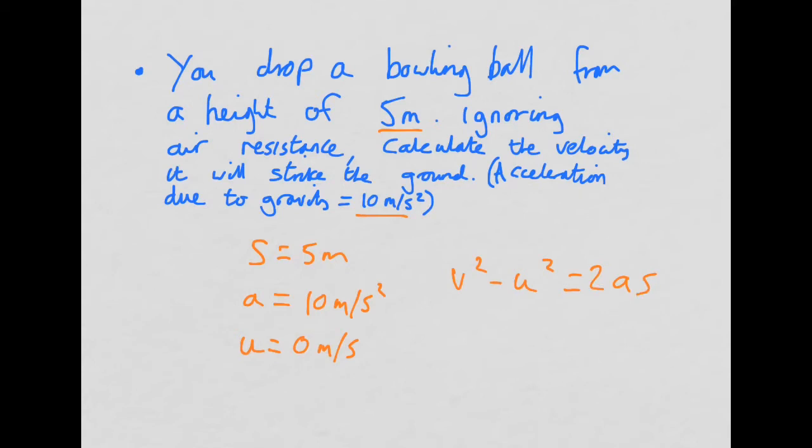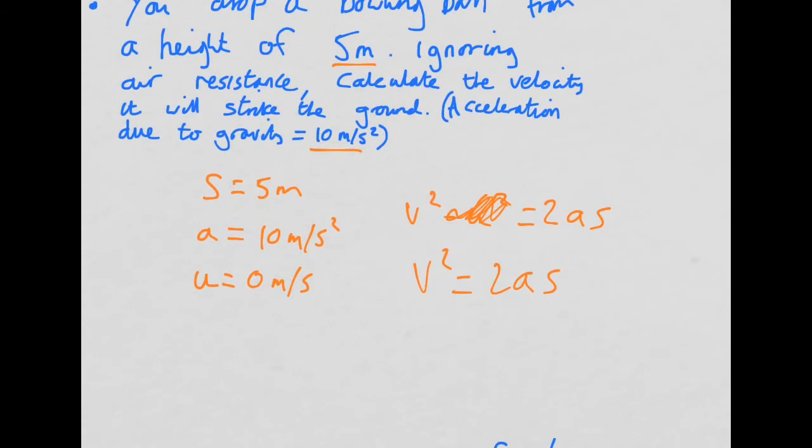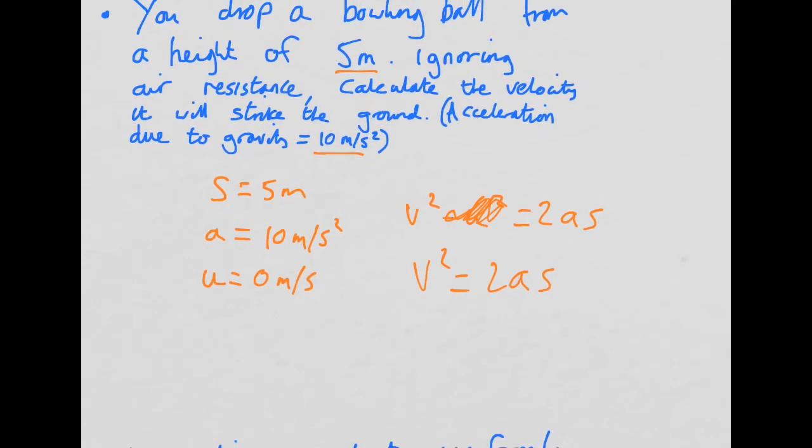Well, if U is 0, then this term is just going to vanish completely. So we're just going to end up with V squared equals 2AS. So if we're calculating the final velocity, A is 10, so it's 2 times by 10. And then it's going to be times by height, which is S as well. So we get 2 times 10, which is 20. 20 times by 5 is 100.